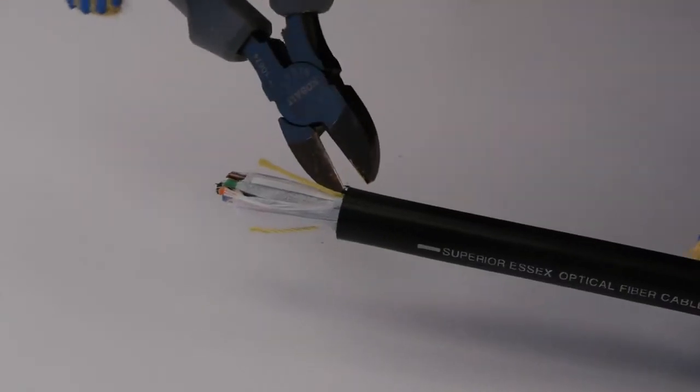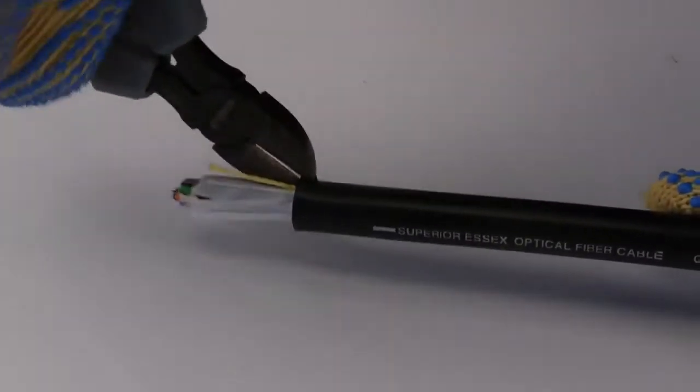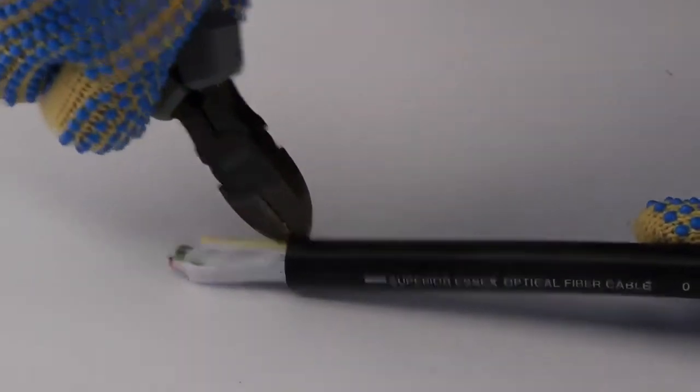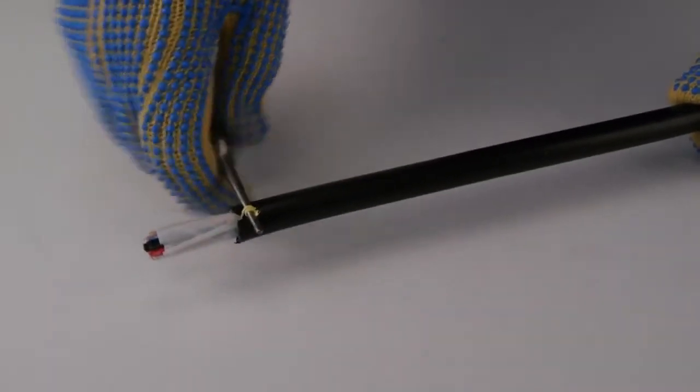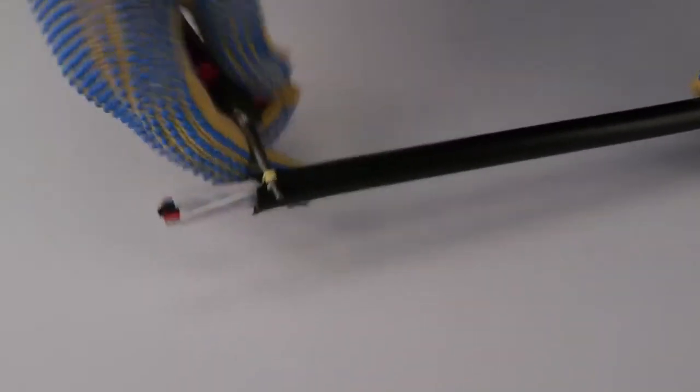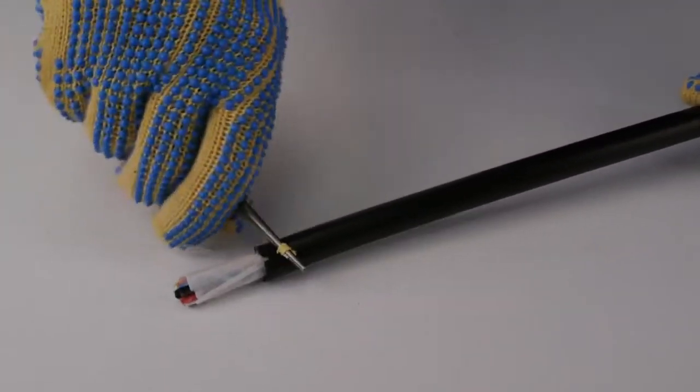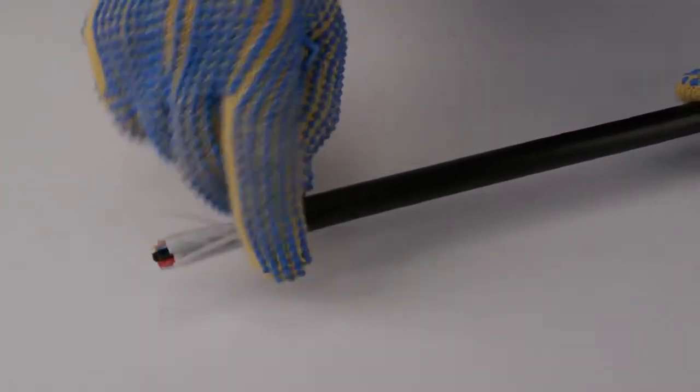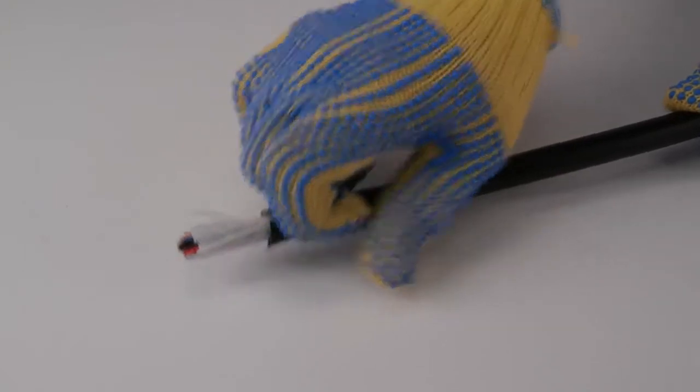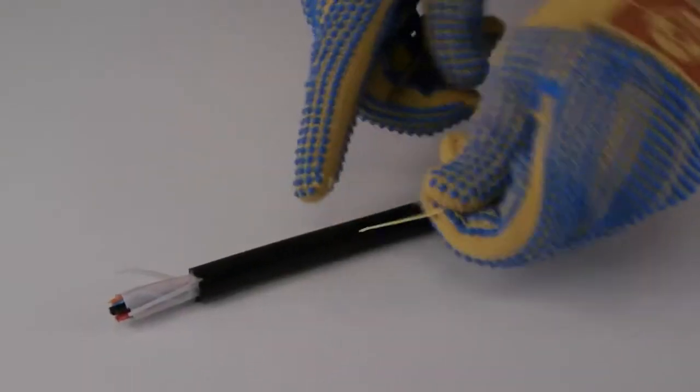Using the diagonal cutters, cut a notch in the jacket or armor next to the rip cords. Using rounded edge needle nose pliers, grab the end of the rip cord, wrap the rip cord around the pliers, and rotate several times. The rip cord will bite into the jacket and armor for an easier start.